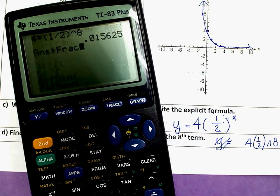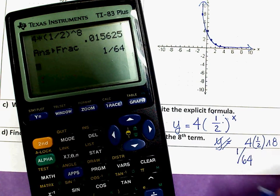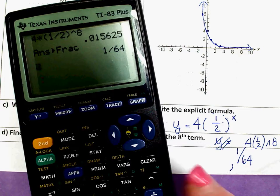So math, enter, enter. And it looks like it makes 1 over 64. So when x was 8, y was 1 over 64.